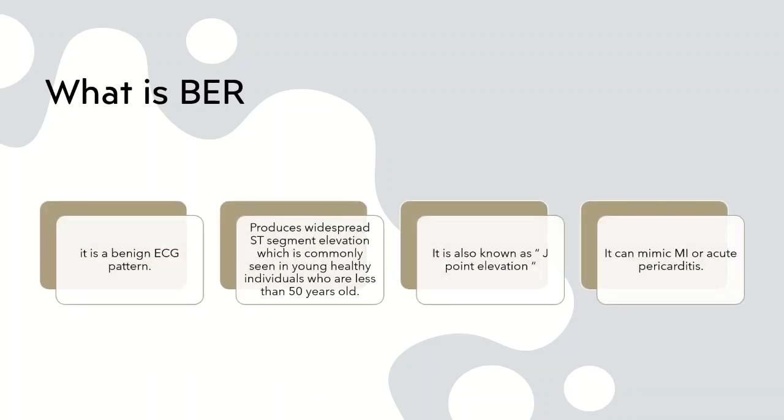Now what is benign early repolarization? It is actually a benign ECG pattern. It produces a widespread ST segment elevation which is commonly seen in young healthy individuals who are less than 50 years old. It is also known as J-point elevation. It can also mimic myocardial infarctions or acute pericarditis. So it is extremely important that we distinguish if it is really benign early repolarization or something sinister.